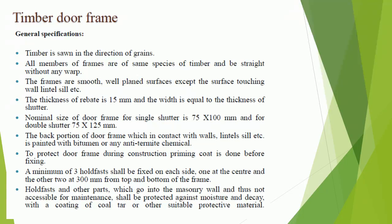A minimum of three hold fasts shall be fixed on each side — one at the center and the other two at 300 mm from the top and bottom of the frame. Hold fasts and other parts which go into the masonry wall, and thus not accessible for maintenance, shall be protected against moisture and decay with a coating of coal tar or other suitable protective material.